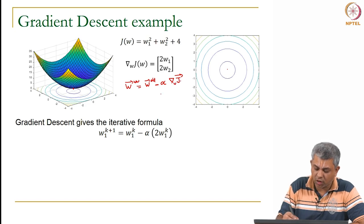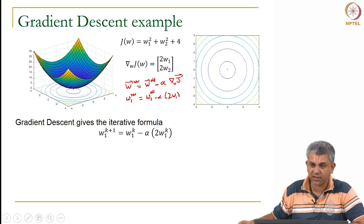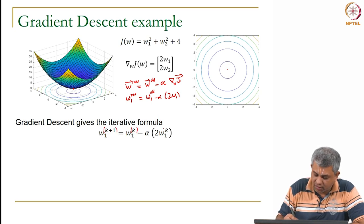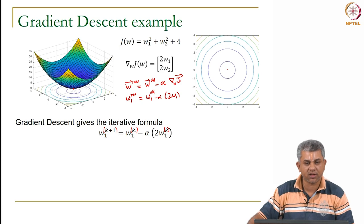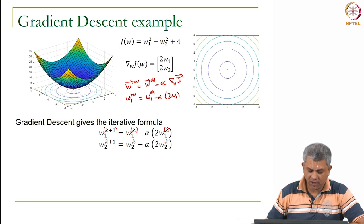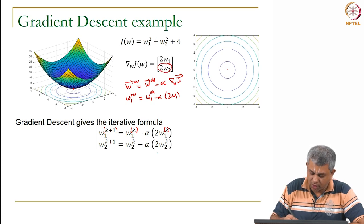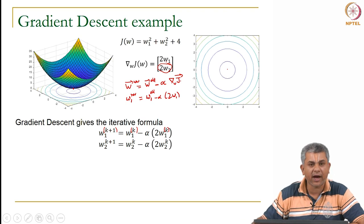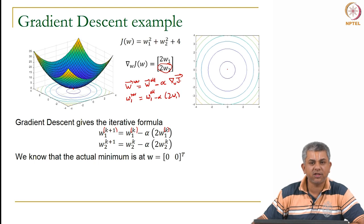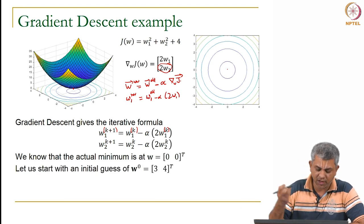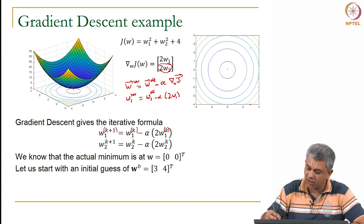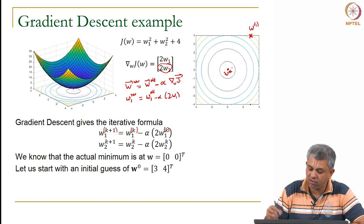The superscript k+1 refers to the new iteration and k to the old — so we iterate from the first guess to the second and so forth. We know the actual minimum is at (0, 0). Let us start with a bad guess of (3, 4). With this starting point, we will take four different choices of alpha to see a range of behaviors: alpha = 2, alpha = 1, alpha = 0.1, and alpha = 0.5.